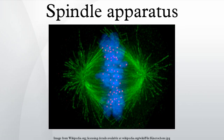In cell biology, the spindle apparatus refers to the subcellular structure of eukaryotic cells that separates chromosomes between daughter cells during cell division. It is also referred to as the mitotic spindle during mitosis, a process that produces genetically identical daughter cells, or the meiotic spindle during meiosis, a process that produces gametes with half the number of chromosomes of the parent cell. Besides chromosomes, the spindle apparatus is composed of hundreds of proteins, with microtubules comprising the most abundant components of the machinery.